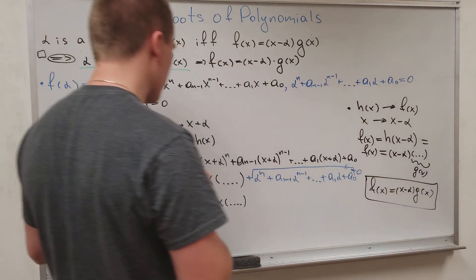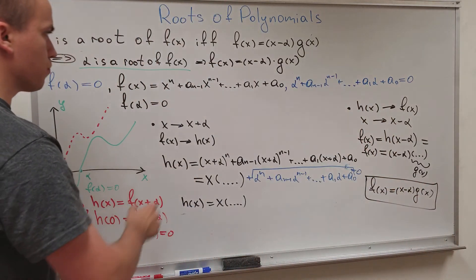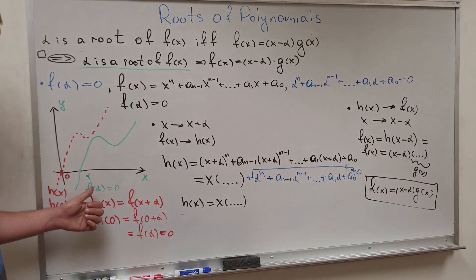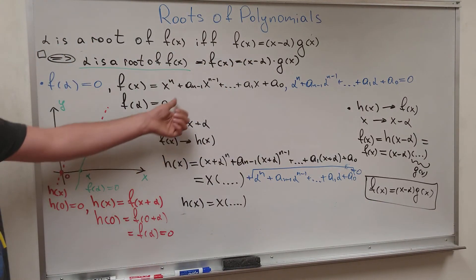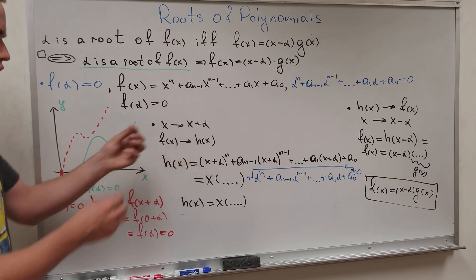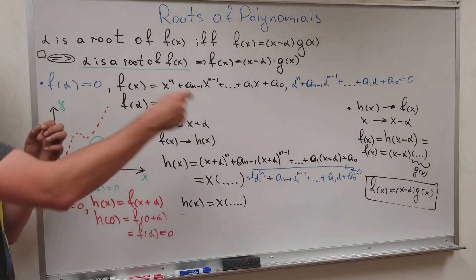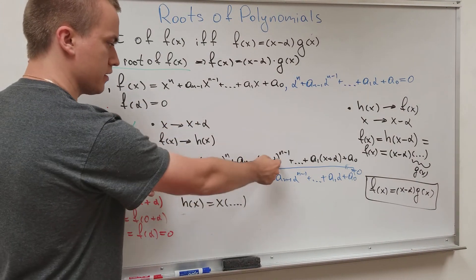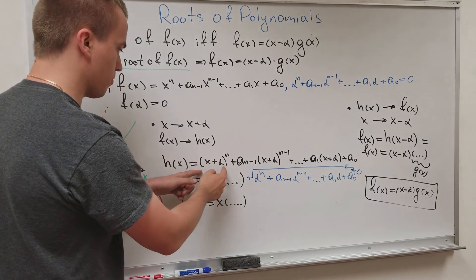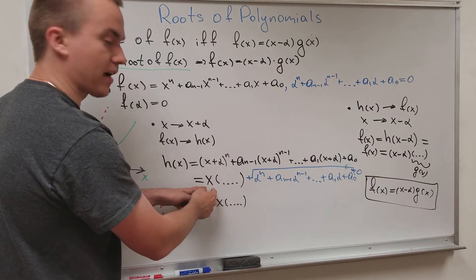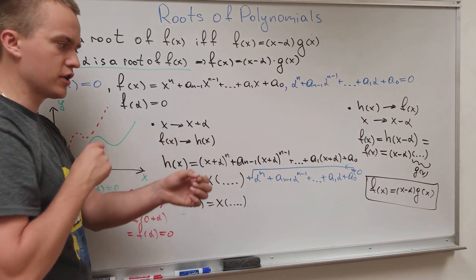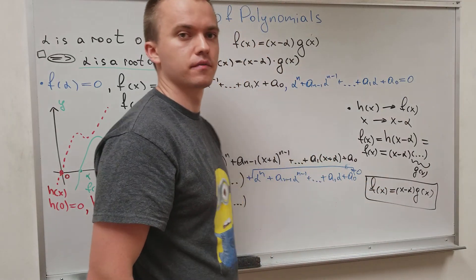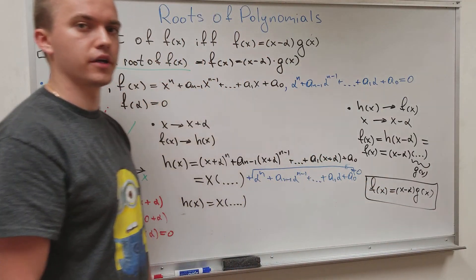To summarize this direction: write your polynomial, shift it by sending x to x + alpha, expand and factor out x — using the fact that f(alpha) = 0 makes the free coefficient vanish — then shift back by replacing x with x − alpha to get exactly the expression (x − alpha) times g(x). Thank you.